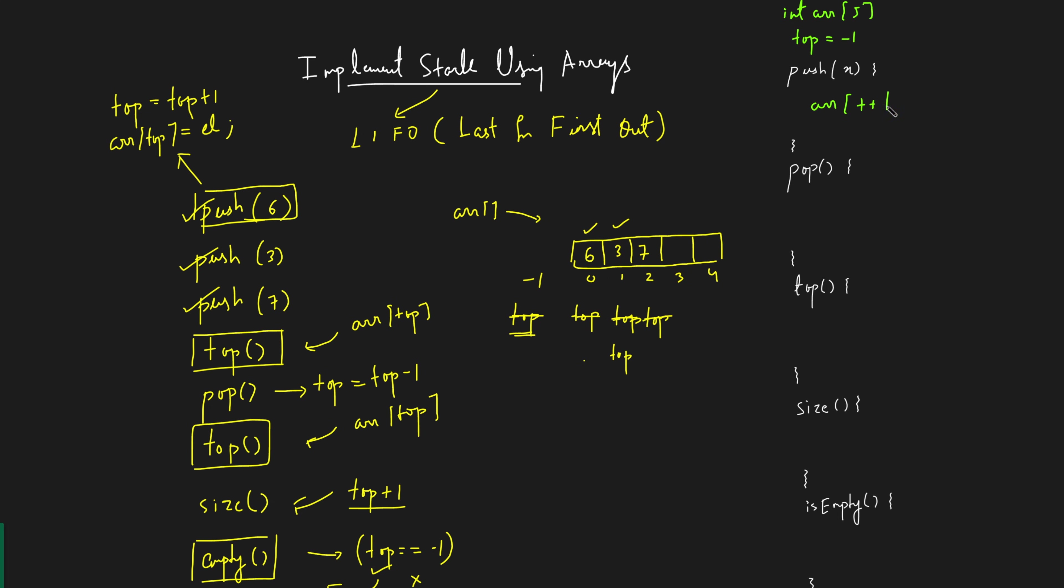If someone says push of x, so can I do this array of, first I will increase top then I will put the value x to it. So that's how the push operation works. How about the pop? Can I say I will just reduce top by minus minus, perfect.